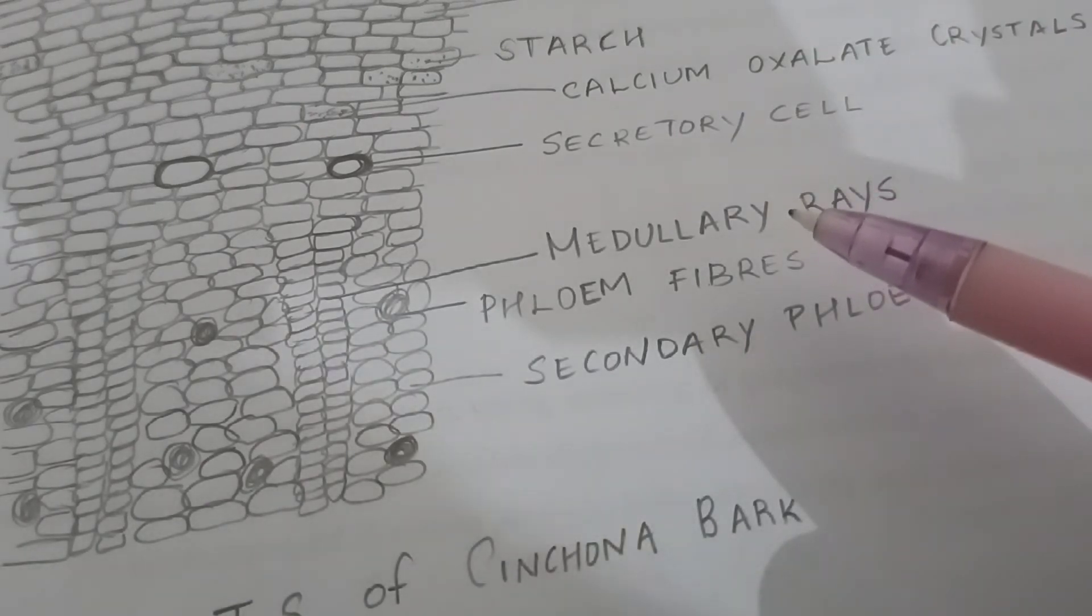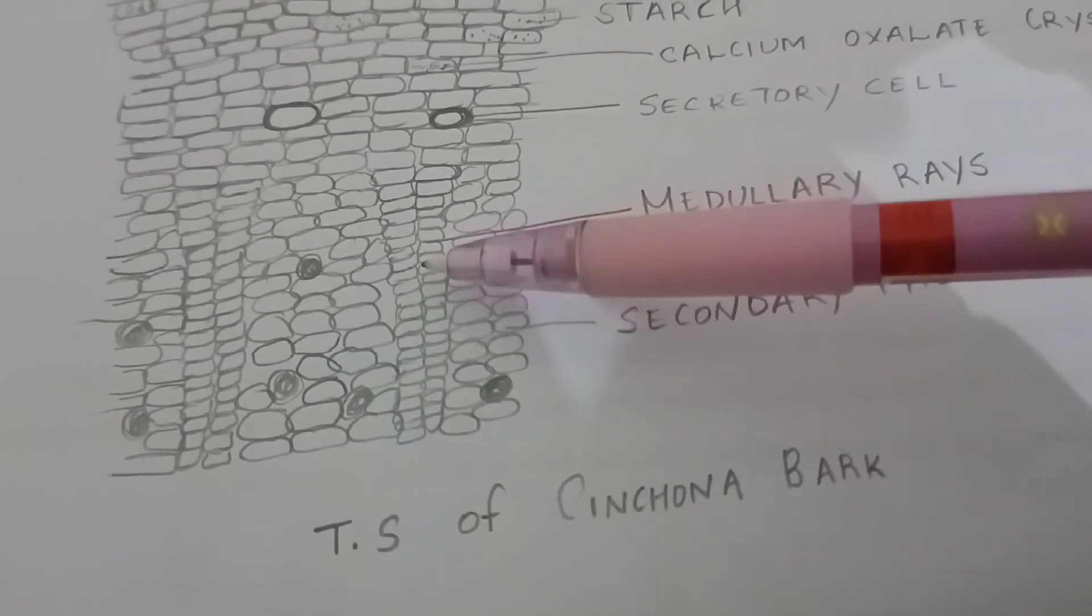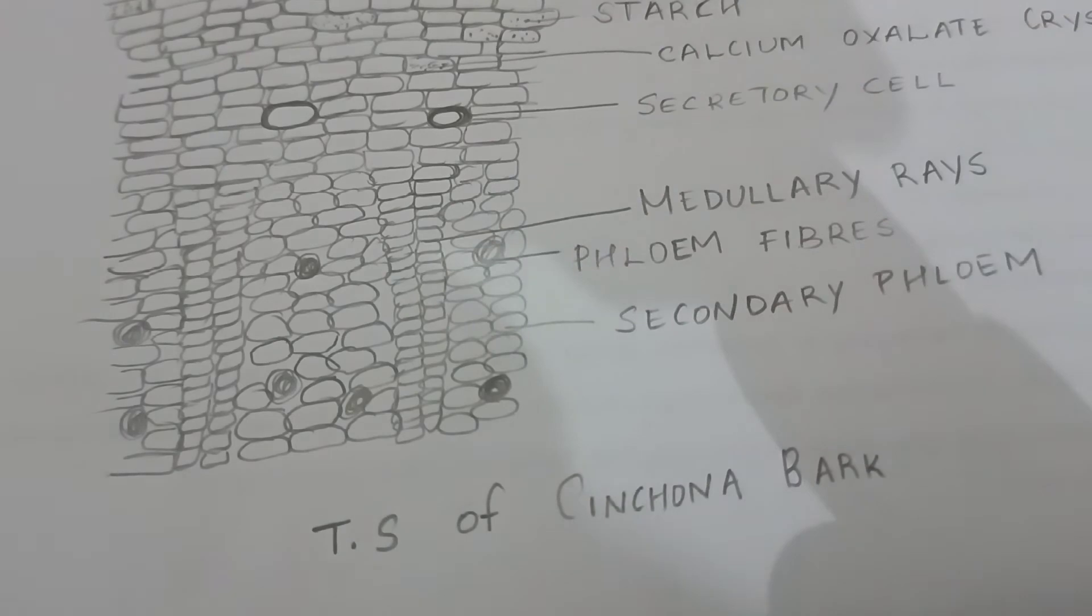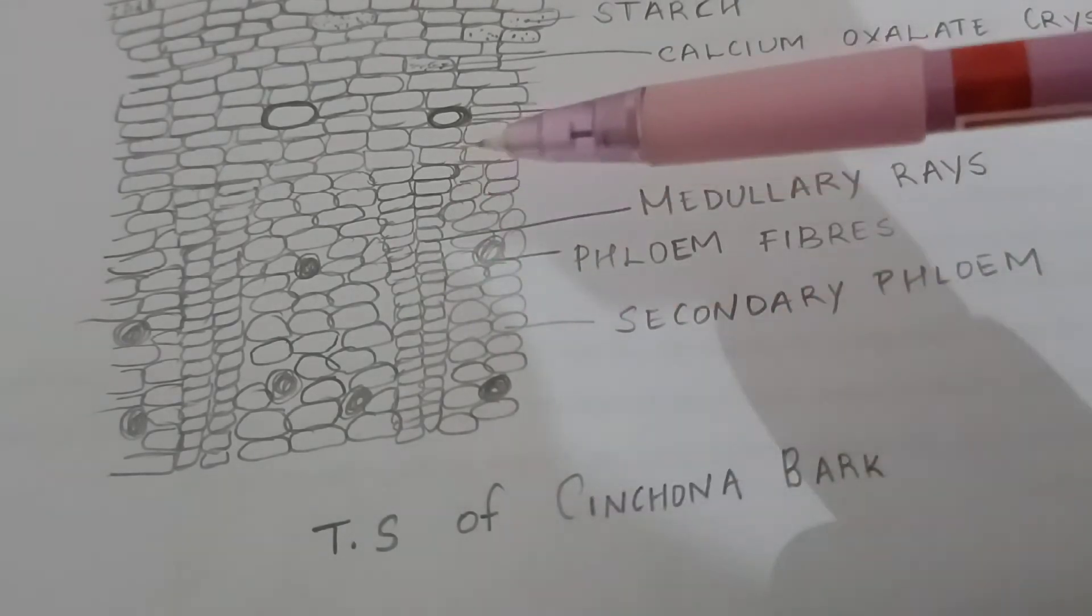Medullary rays are 1-3 seriate. They extend up to the cortex, cells readily elongated and contain starch grains.